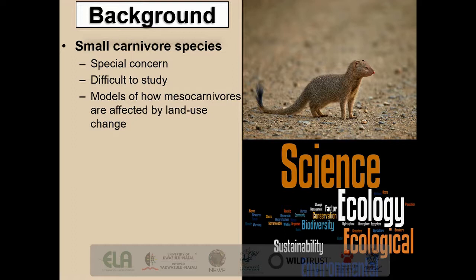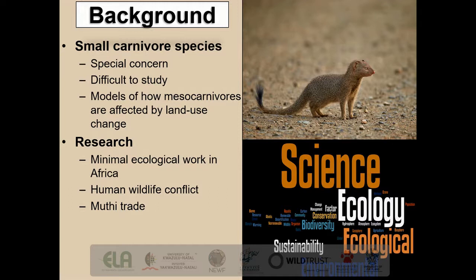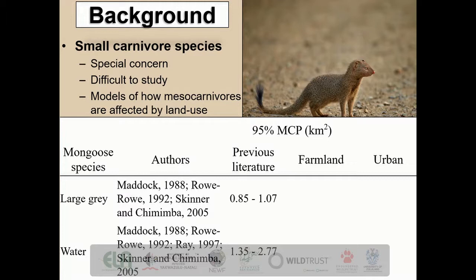Given that they're difficult to study, we need to gain insights and models on how meso-carnivores are affected by active land use change, such as farming and urbanization. Minimal ecological research has been done on meso-carnivores and Herpestidae as a whole in Africa. They persist in the presence of human-wildlife conflict, particularly in agricultural areas, as they are regarded as vermin and able to transmit rabies. Additionally, there is a growing market of multi-trade for their parts. As shown in the table provided, there is quite a limited amount of research conducted on the two target species of this study in terms of their overall home range behaviour, and hopefully this study will be able to give more insight into how processes of agriculture and urbanization are affecting their land use.